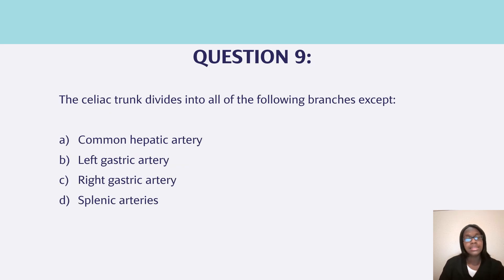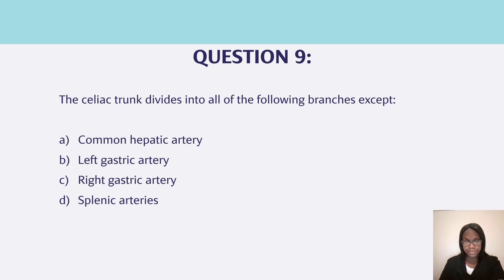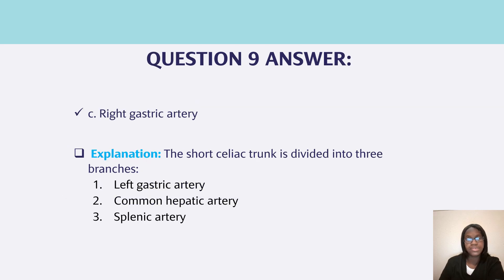Question nine, the celiac trunk divides into all of the following branches except: common hepatic artery, left gastric artery, right gastric artery, or splenic artery? So all of these are true except one — which one is not true? The right gastric artery is not a branch of the celiac trunk. The short celiac trunk is divided into three branches: the left gastric artery, common hepatic artery, and splenic artery.